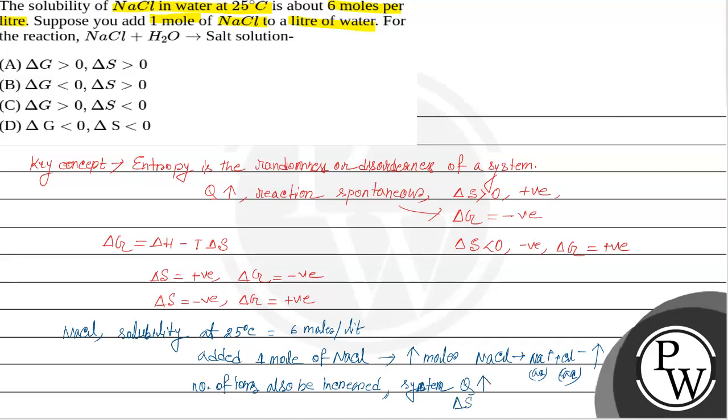This means delta S is positive, it increases. If delta S is positive, definitely the reaction will be spontaneous. Delta G will be negative for this reaction. Let's check the options. This means delta S is greater than 0 and delta G is less than 0.